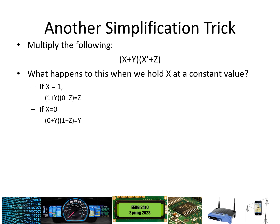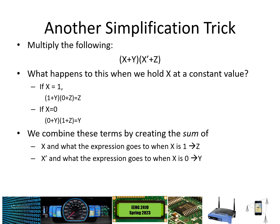If x is held at zero, we do the same logic: (0 OR y) AND (1 OR z). Zero OR y gives y, 1 OR z gives 1, so that simplifies to y. Now we combine those terms by creating the sum of x AND what the expression gives when x is 1 — which is z — OR x' AND what the expression gives when x is 0 — which is y. So (x OR y) AND (x' OR z) works out to xz OR x'y.